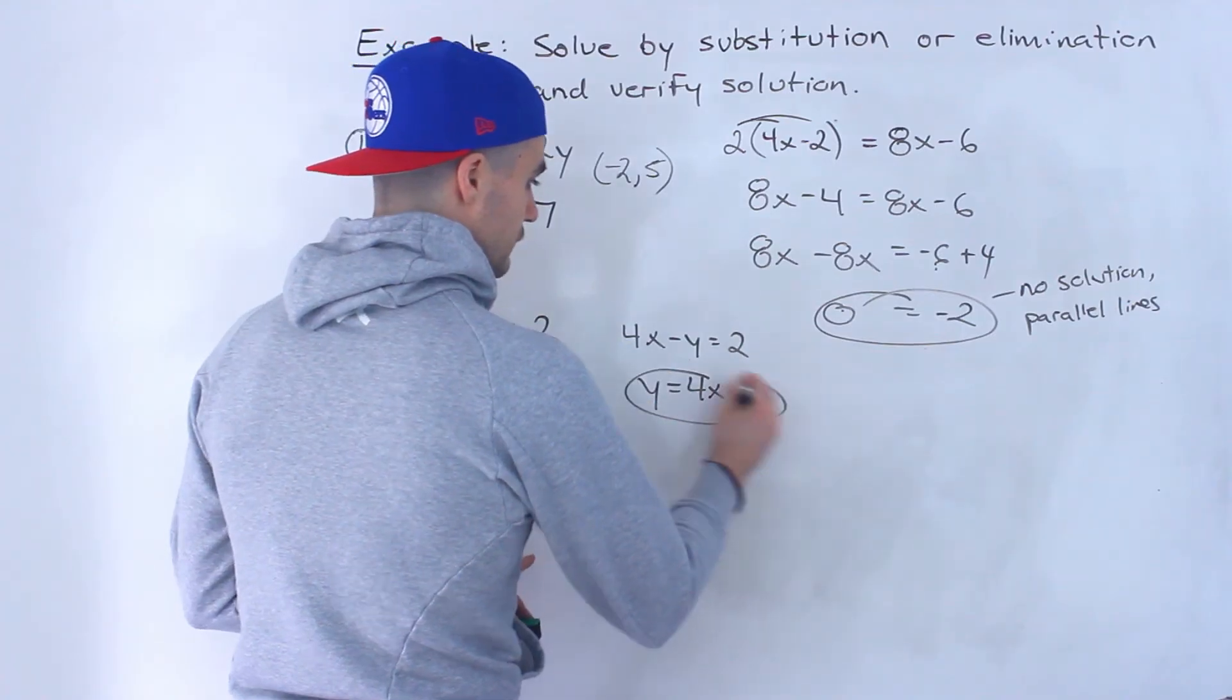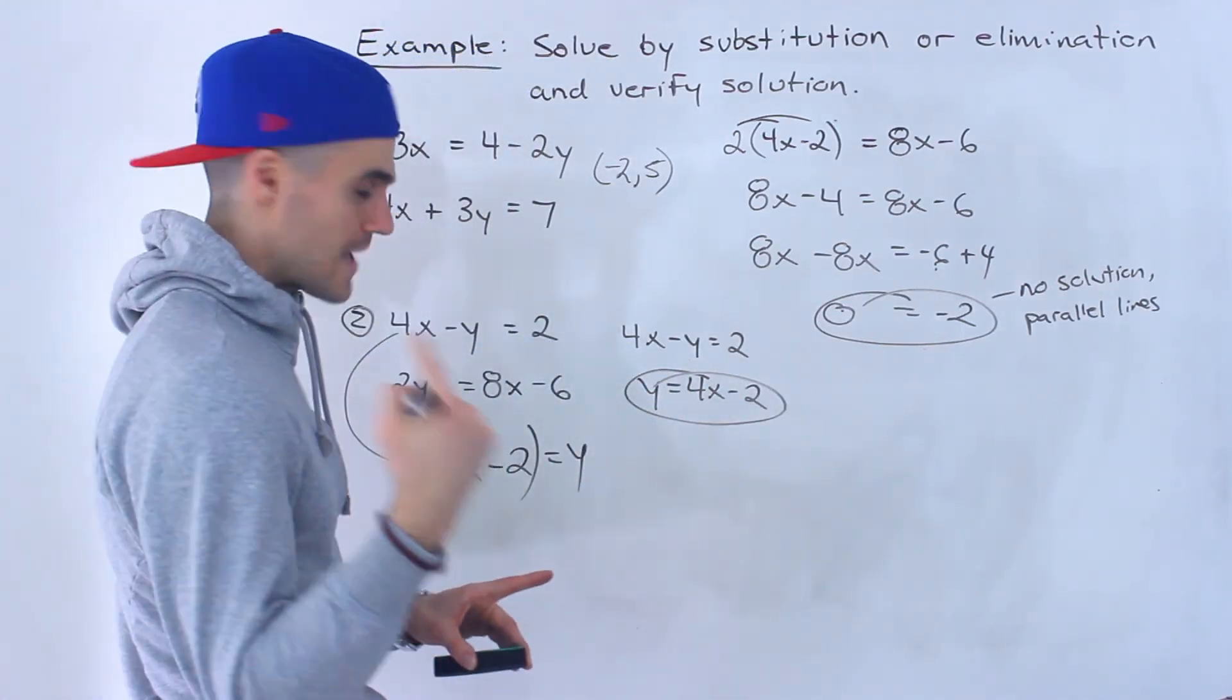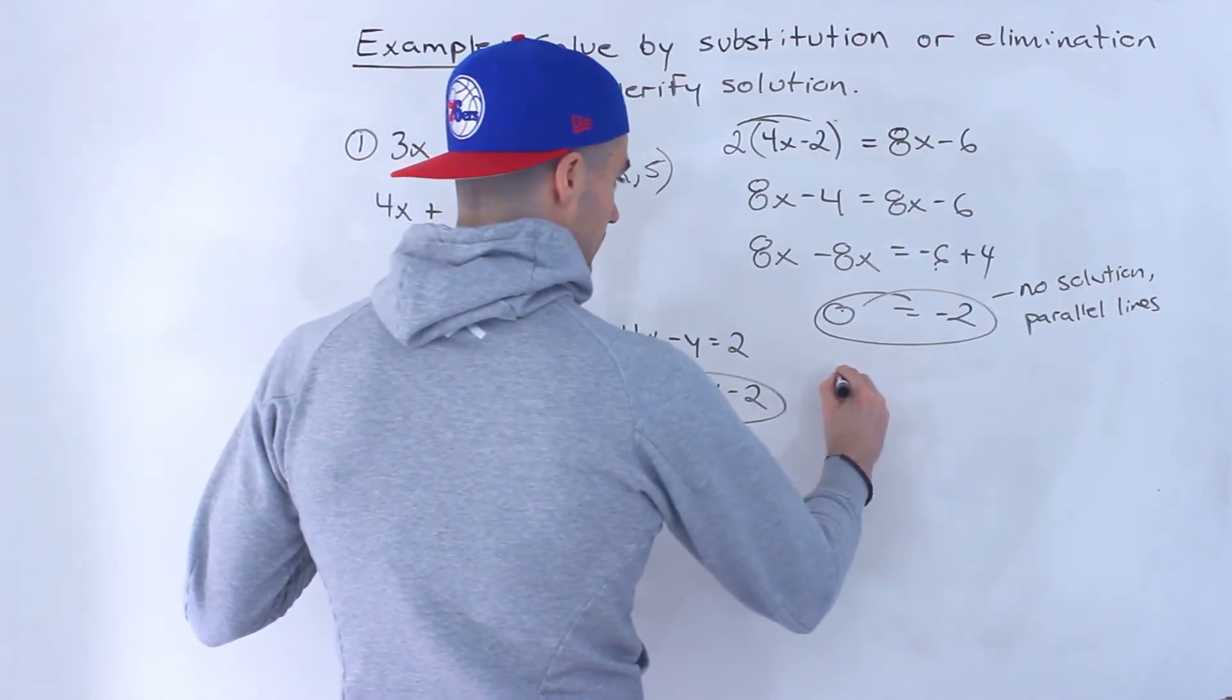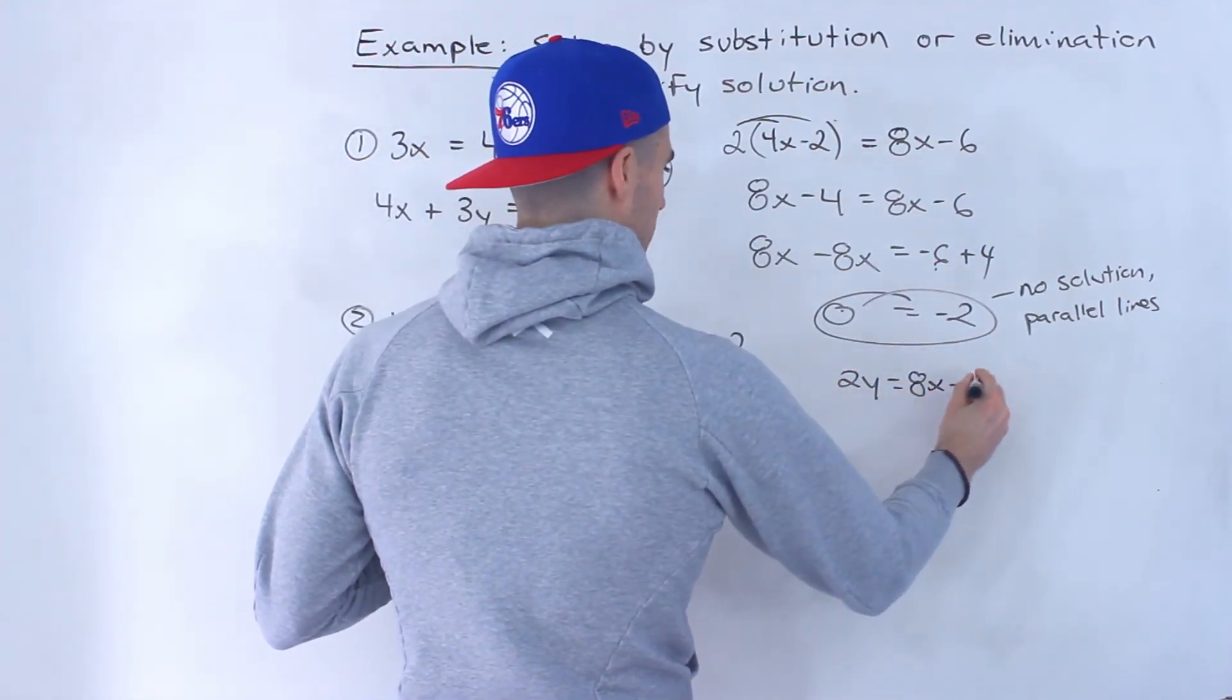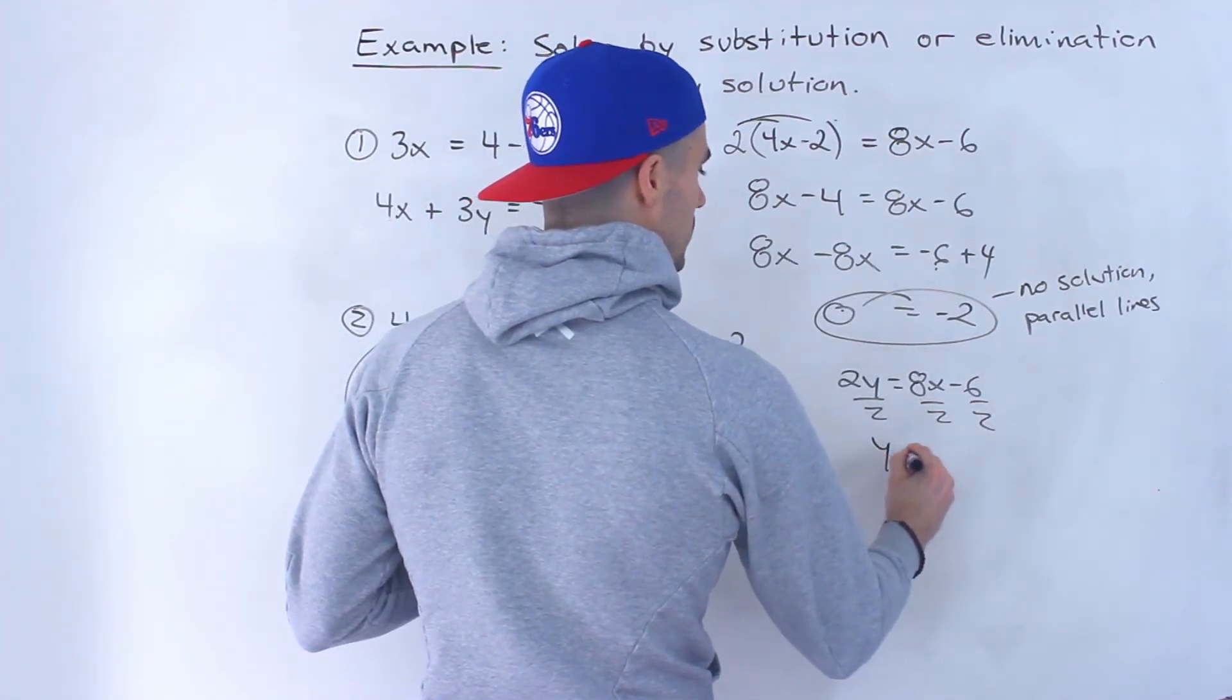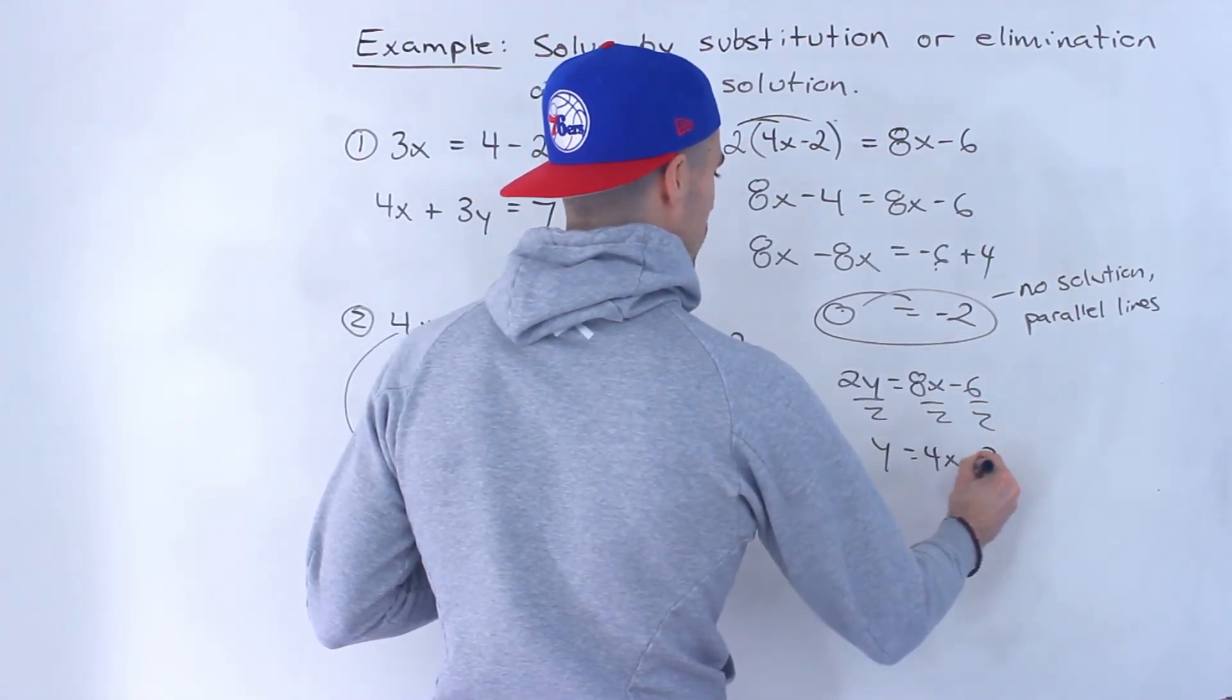And then the second line, to isolate for the y, we could just divide by 2. So y would be 4x minus 3.